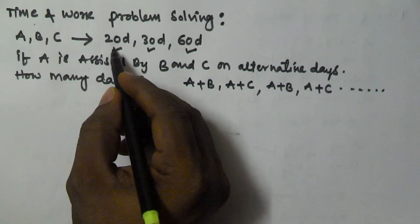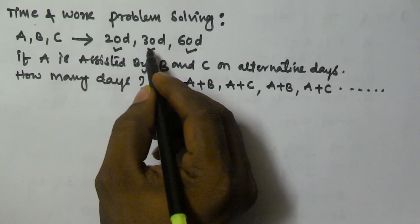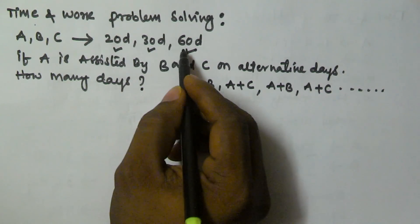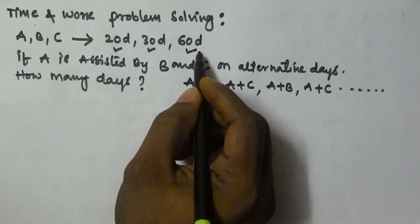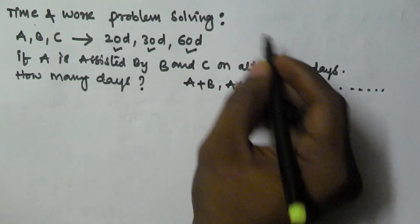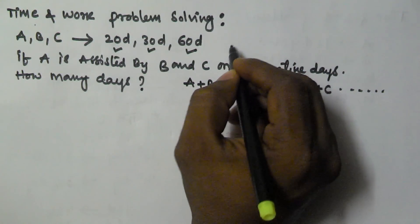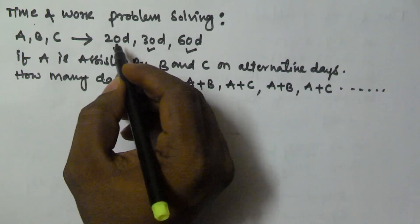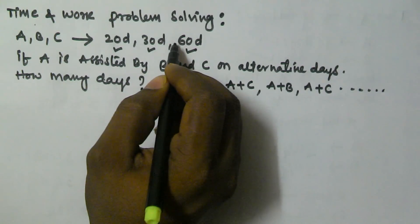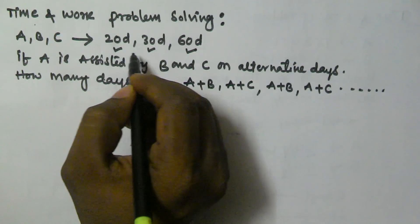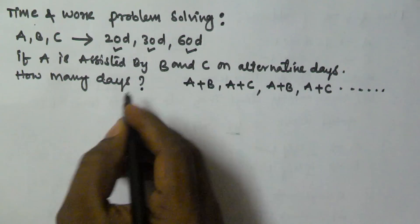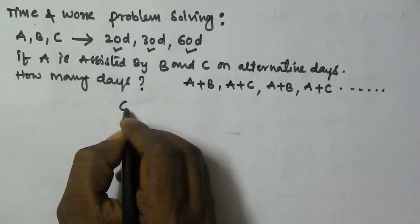A takes 20 days, B takes 30 days to finish the same task, and C takes 60 days to finish the same task. So let us take the LCM of 20, 30 and 60. The LCM of 20, 30 and 60 is going to be 60.